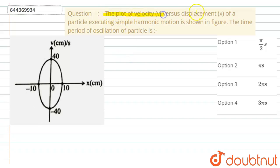The plot of velocity versus displacement x of a particle executing simple harmonic motion is shown in the figure. The time period of oscillation of particle is - so let's see the solution. In this question we have given a plot between velocity and the displacement of a particle while doing simple harmonic motion.